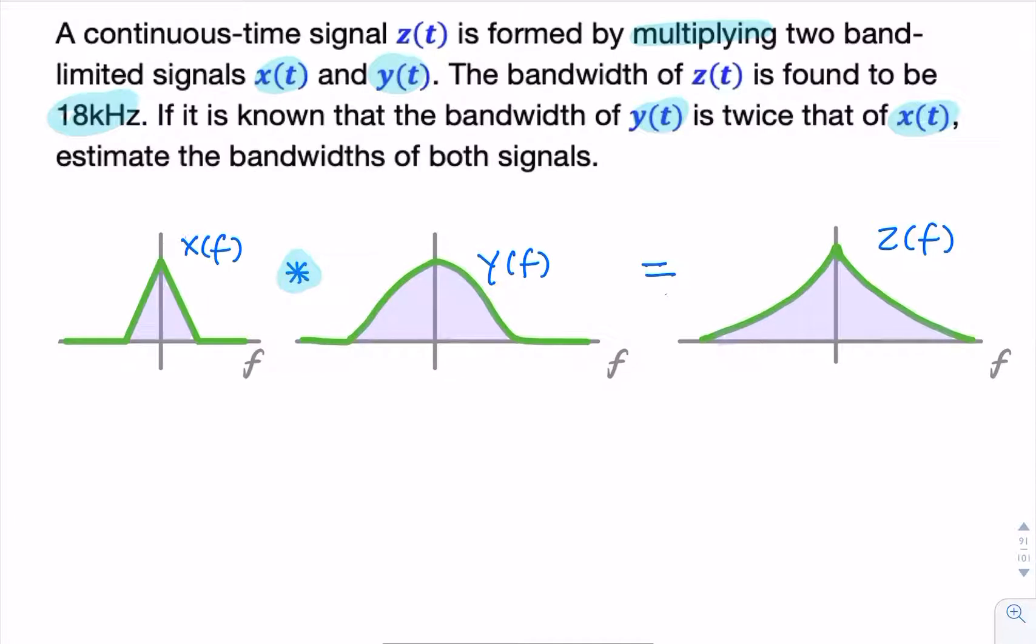The bandwidths, let's call this bx, and this by, and that would be bz. Of course, bz is given in the question as 18 kHz. That's our 18k. Now,